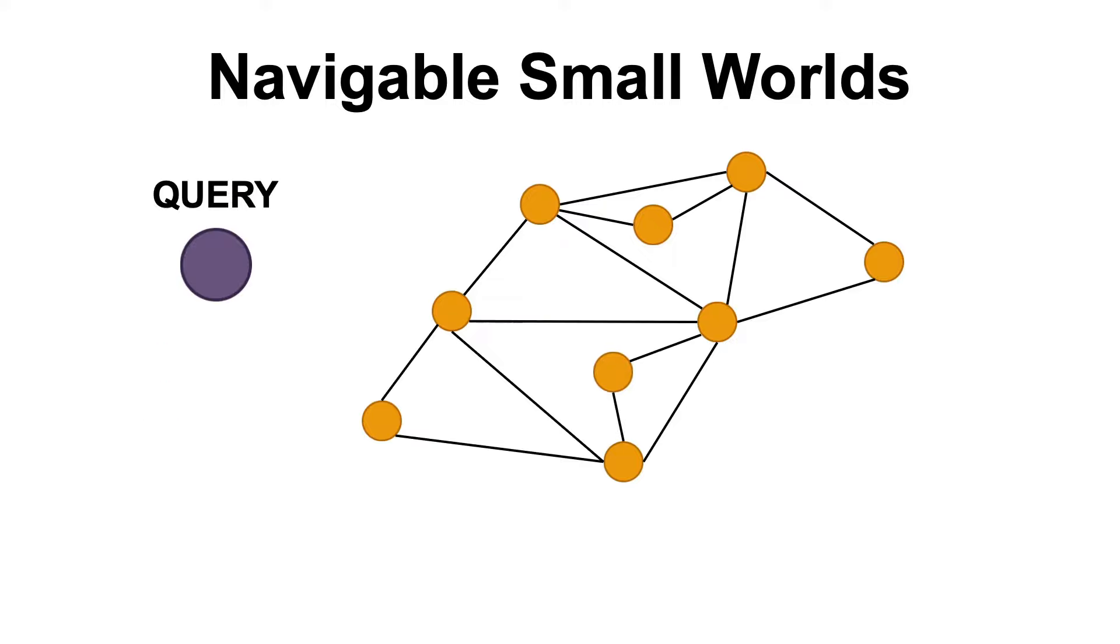Now, let's say we want to find the most similar documents to a query. In navigable small worlds, we start at a random node in the graph, and then we look at the neighboring nodes, and we move to the one that's the closest to our query, if the distance of that neighboring node to the query is smaller than the distance of the current node to the query. Then we look again at the neighboring nodes of the next node, and we move to its neighboring node that's closest to our query.